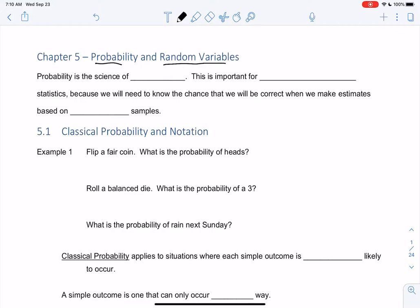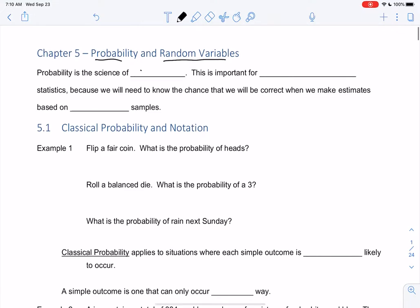Probability is the science of chance. This is important for inferential statistics, which we really haven't done yet. Remember, inferential is taking a sample back in chapter 1 to make estimates about a population.